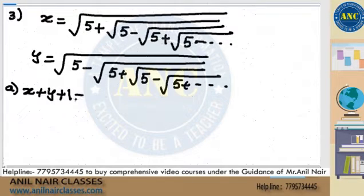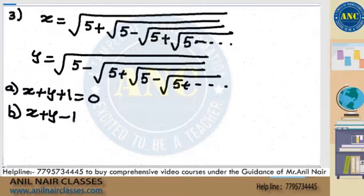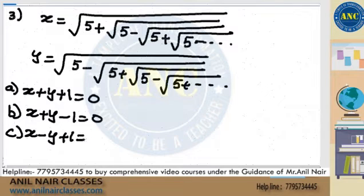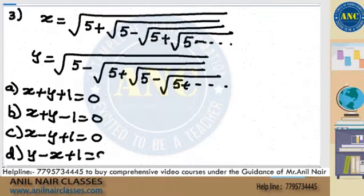Option A: x plus y plus 1 equivalent to 0. Option B: x plus y minus 1 equivalent to 0. Option C: x minus y plus 1 equivalent to 0. Option D: y minus x plus 1 equivalent to 0. Option E: y minus 1 plus 1 equivalent to 0. I have seen this problem in many textbooks.